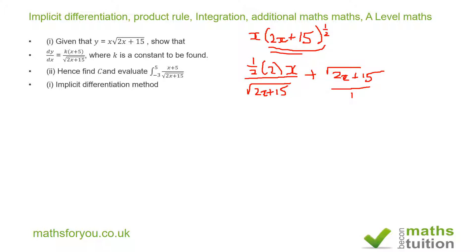So for these two terms, the numerator is x over the square root of 2x plus 15, plus the square root of 2x plus 15. Note that the 2 in the first term cancels, so you are left with x.